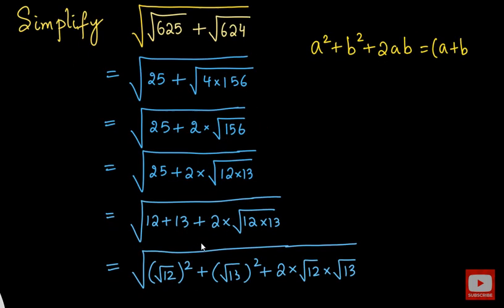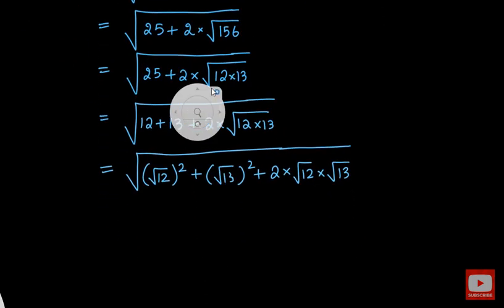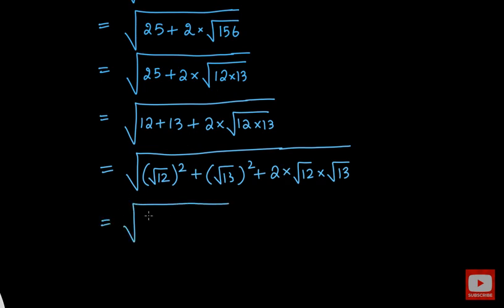So using that identity we can write the expression inside the square root as root 12 plus root 13 the whole square, which is nothing but a plus b whole square. Now we can cancel out this square and this square root, and this term will come outside the square root, that is root 12 plus root 13. So this will be our answer to the question.